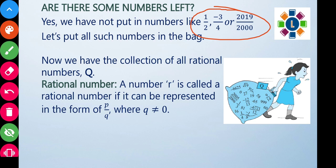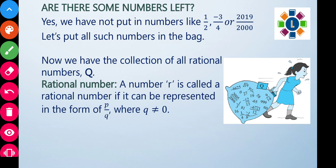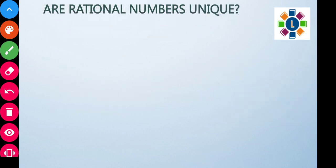So the collection of all rational numbers forms a large group. All of these can be represented on the number line. However, rational numbers are so densely packed that between any two rational numbers there are infinitely many more rational numbers.